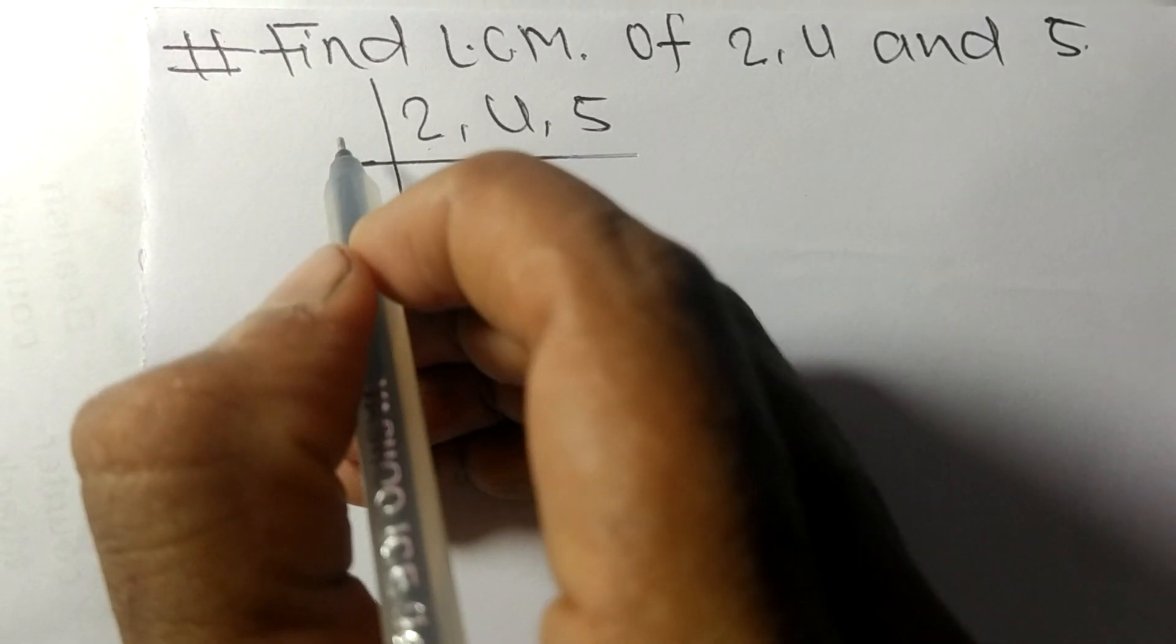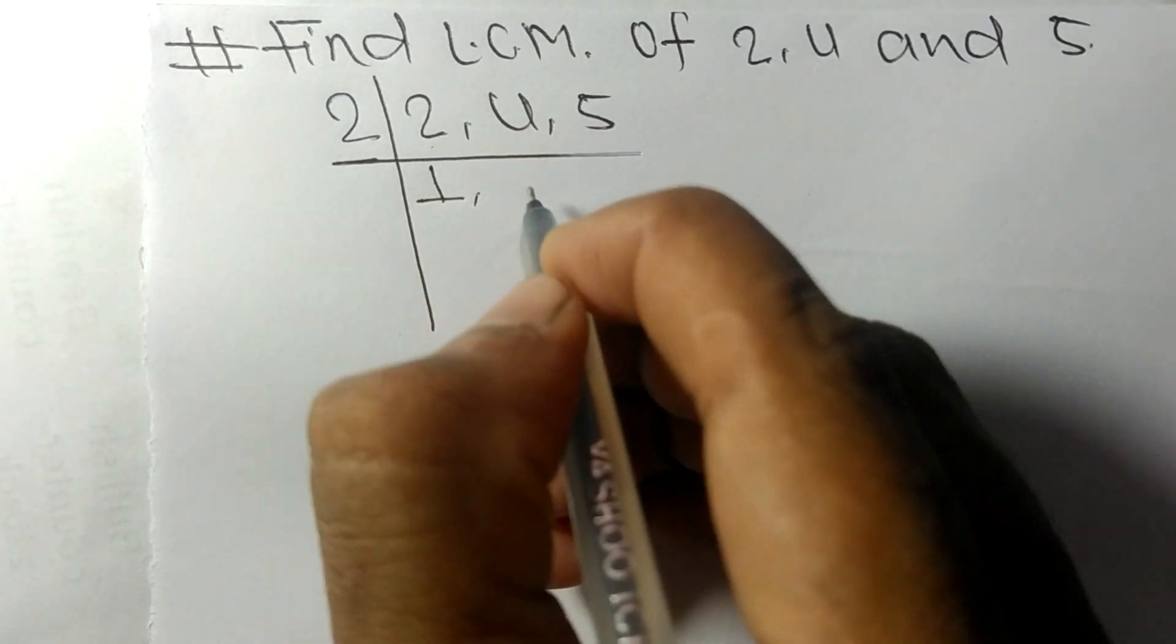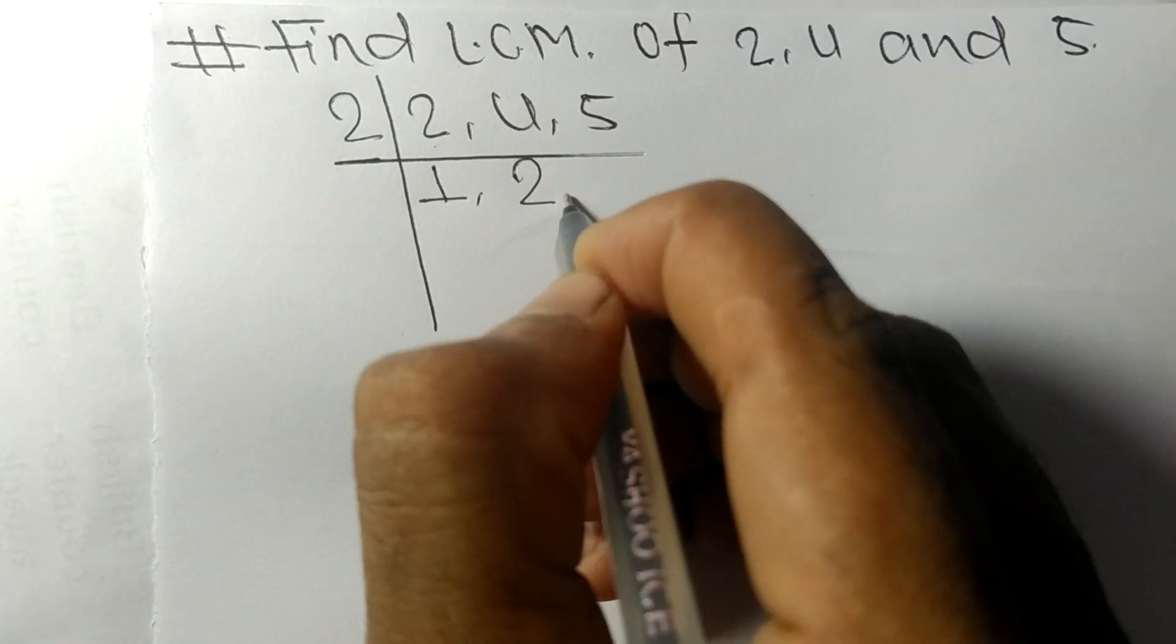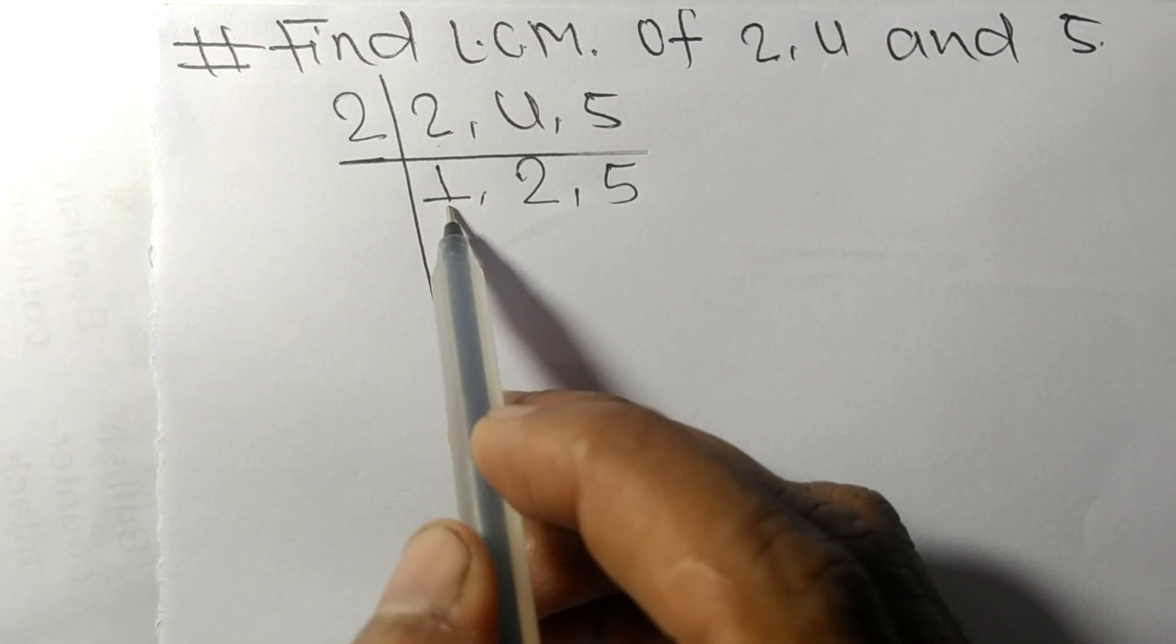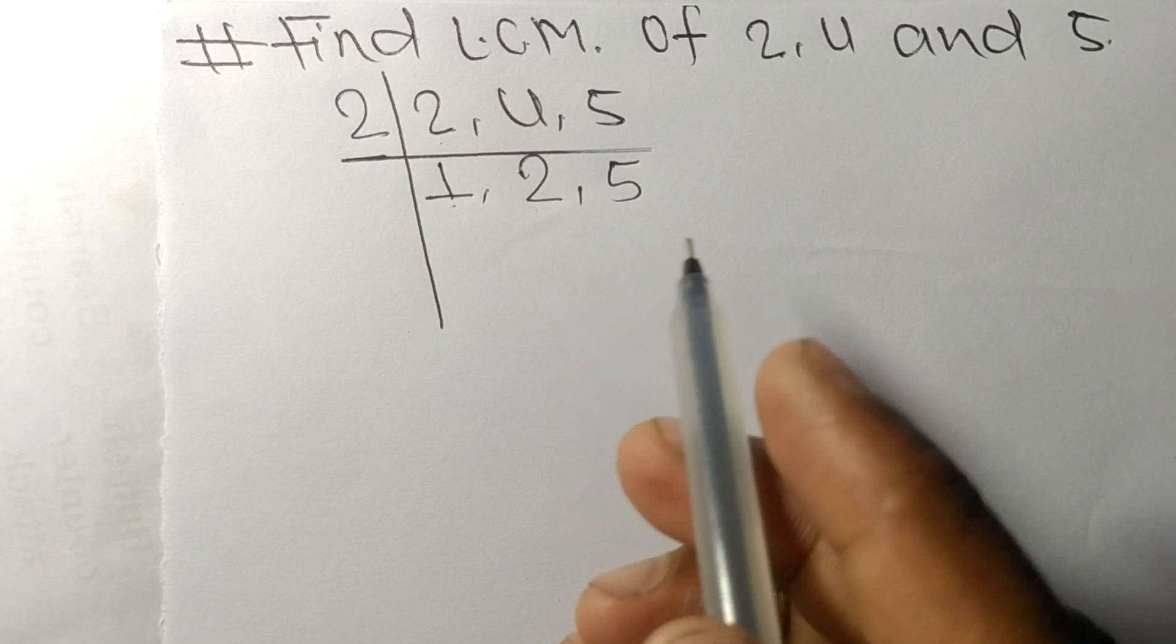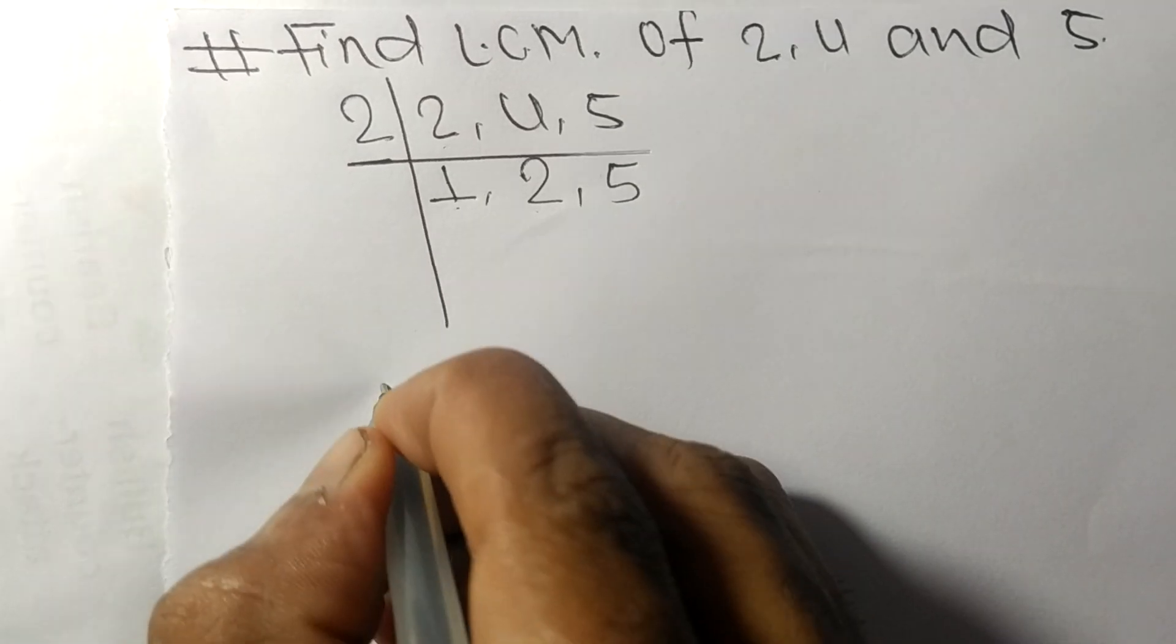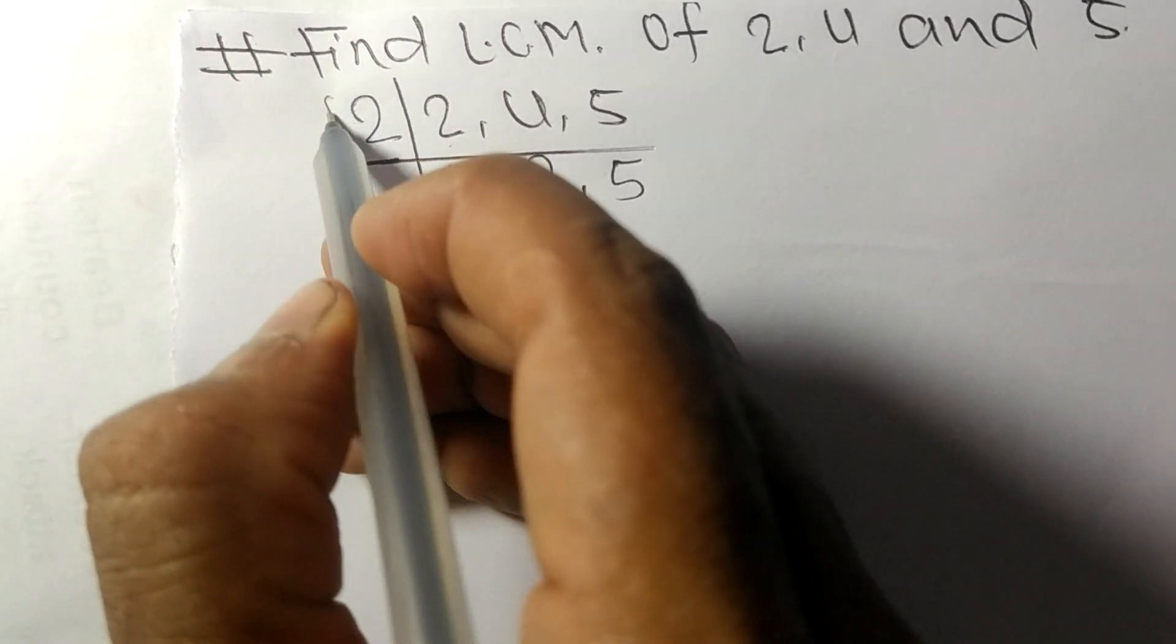2 times 1 means 2, 2 times 2 means 4, 5 as it is. Now these numbers 1, 2, and 5 are not exactly divisible by the same number. Therefore, LCM is equal to...